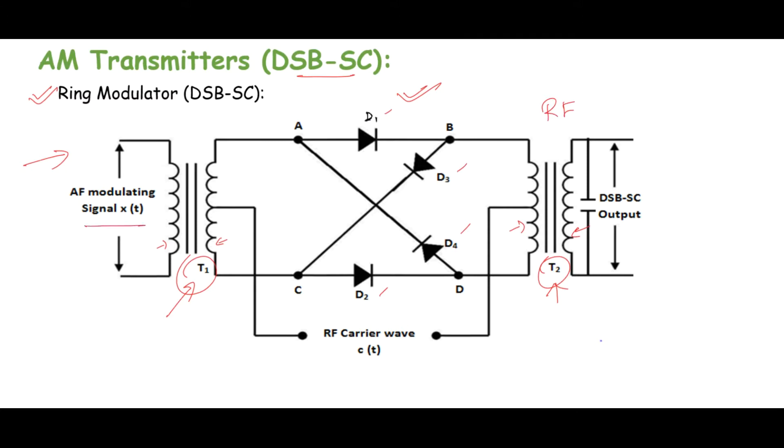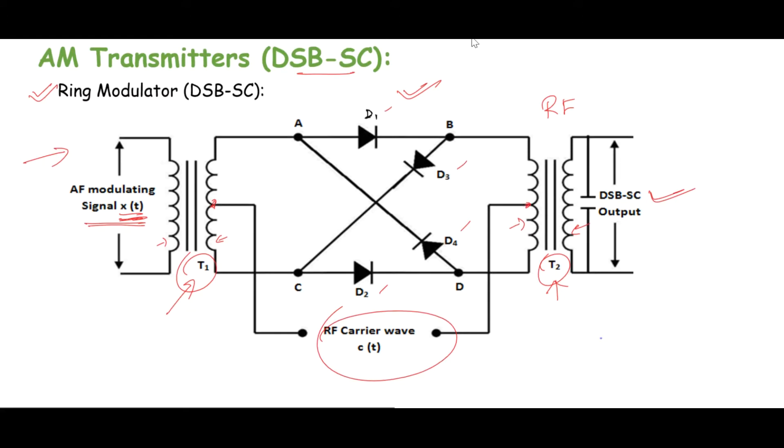On the left-hand side of T1, on the primary, we'll apply the message signal. At the secondary of T2, DSB-SC output will be observed. Carrier is supplied through the center taps of the transformer windings.